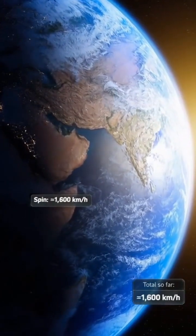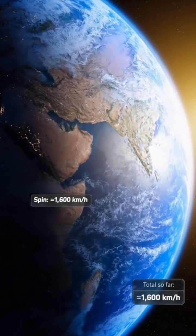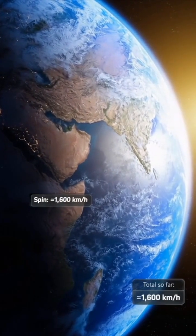First layer, Earth's spin. Stand on the equator and you're already whipping around at about 1,600 kilometers per hour. Faster than a jet.